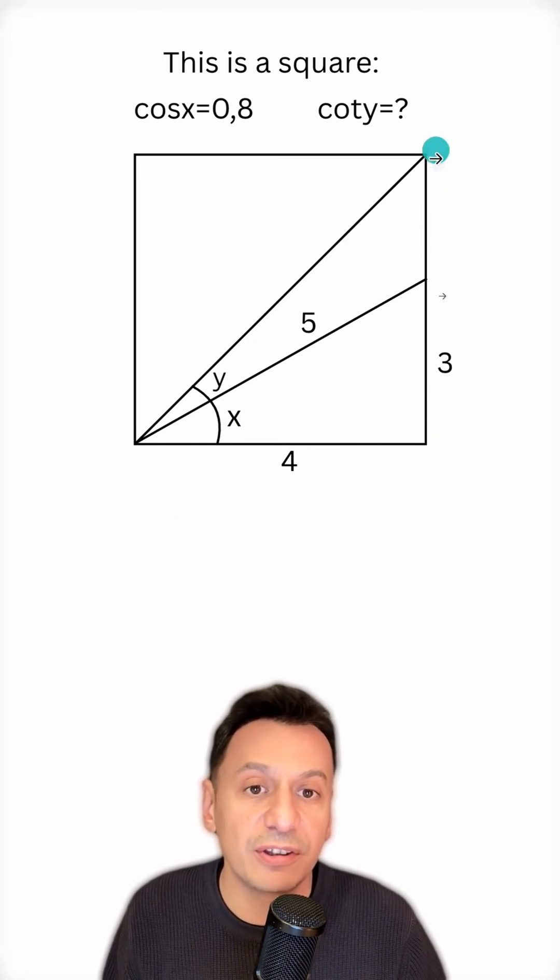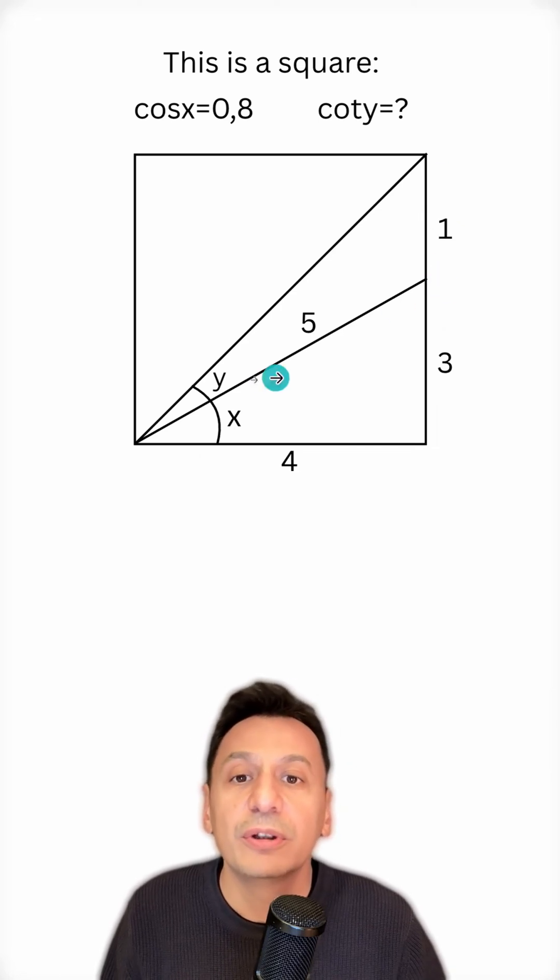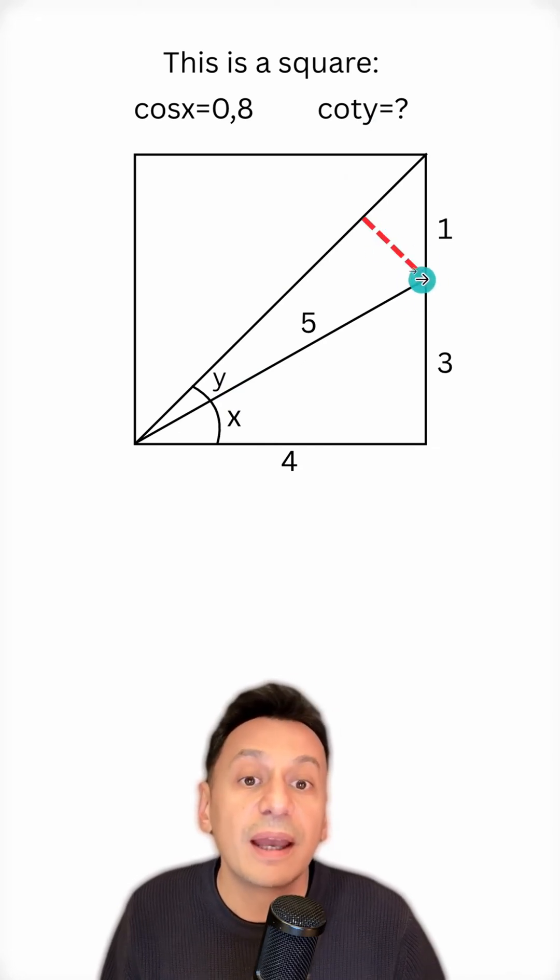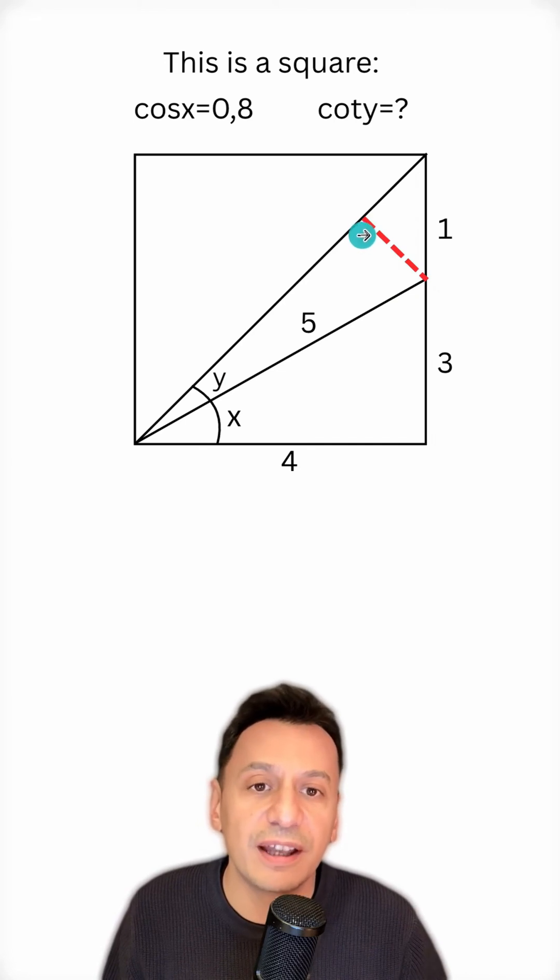Since the sides of a square are equal, this side is 4, and this side is also 4. Therefore, the side here is 1. Now to find the value of cotangent y, I want to form a right triangle here. So from this point, I draw a perpendicular down to here. After drawing this perpendicular, something catches my attention.